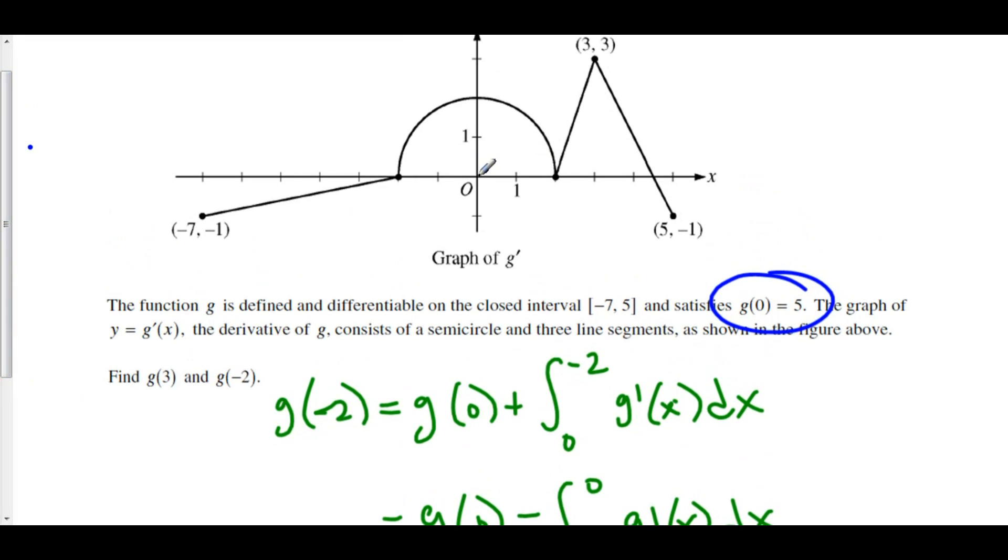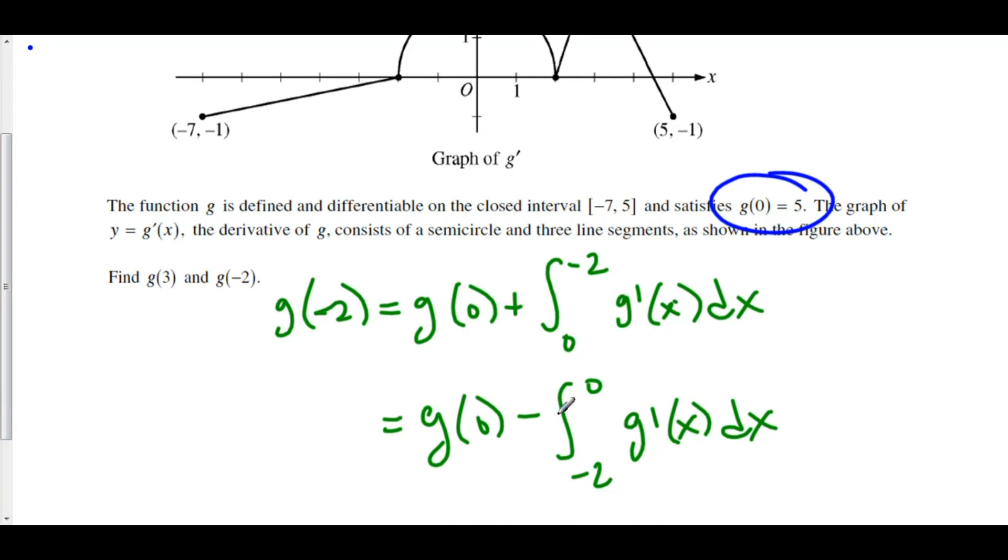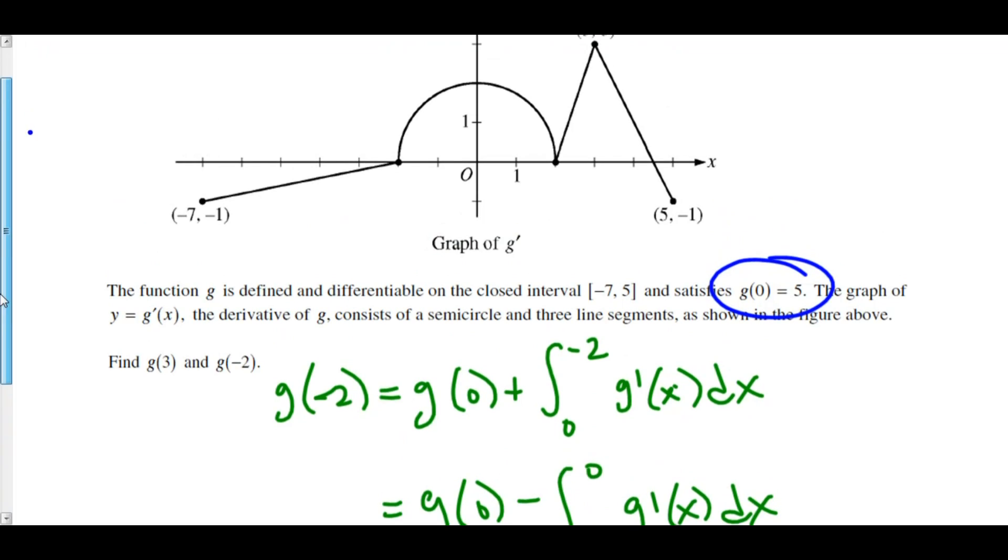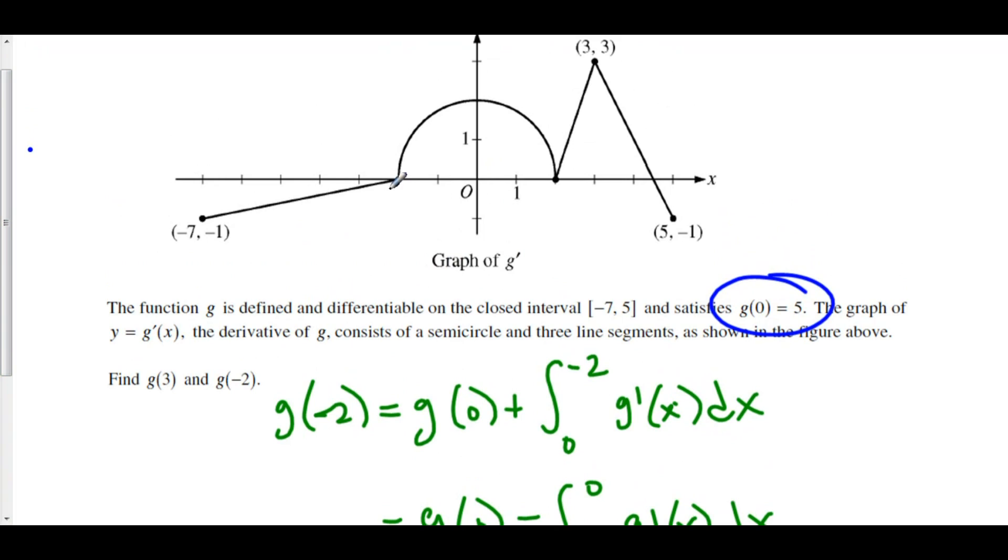Now, by going backwards, we're finding a negative integral. The way that we can represent that is by either switching our limits of integration so that we have a negative in front of the integral or by thinking of right to left as a negative net change.